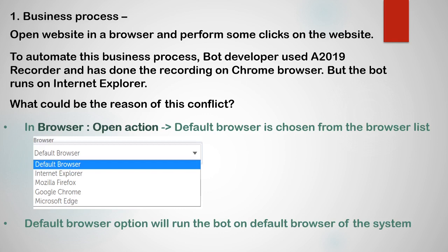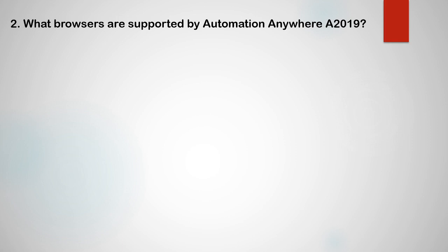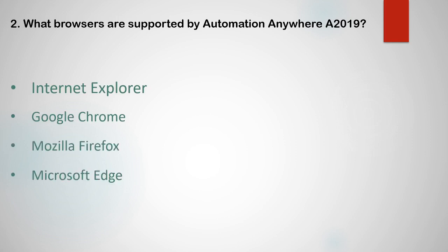So if the bot developer has done the recording on Chrome browser but the default browser of the bot developer's system is Internet Explorer, and he has chosen the default browser from the drop-down, then this conflict will occur. There could also be a follow-up question: what browsers are supported by Automation Anywhere A2019? A2019 supports Internet Explorer, Google Chrome, Mozilla Firefox, and Microsoft Edge.